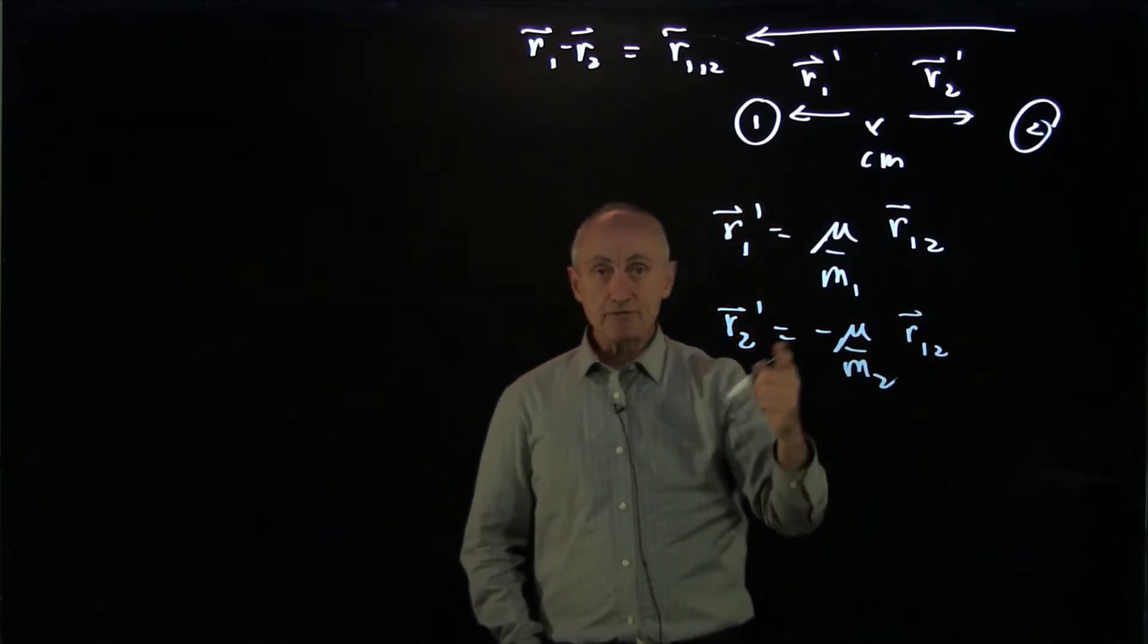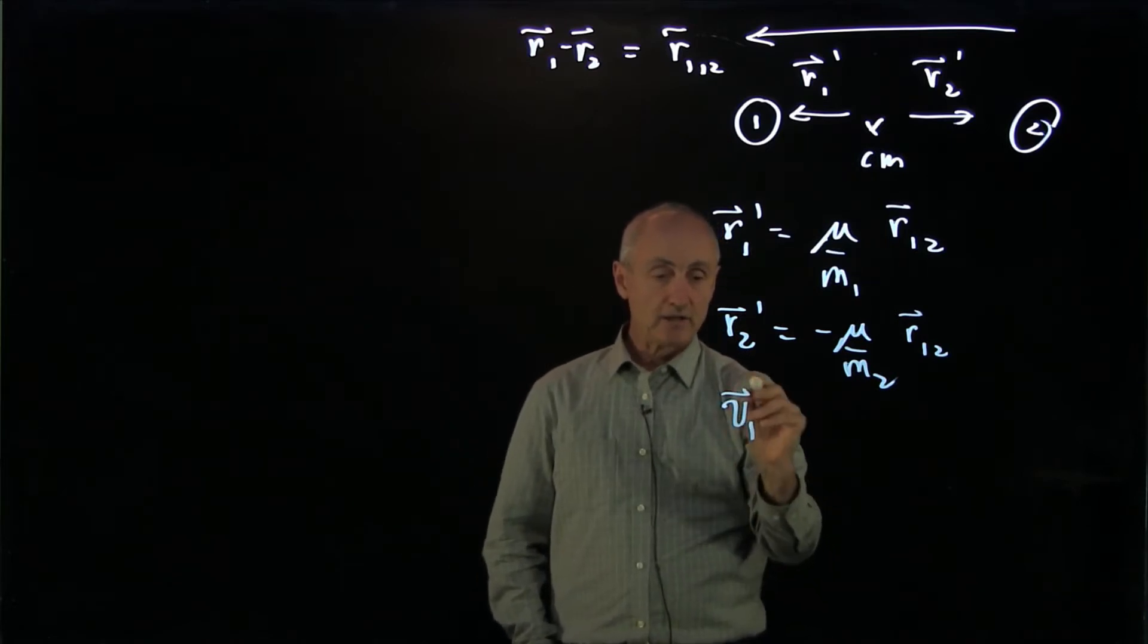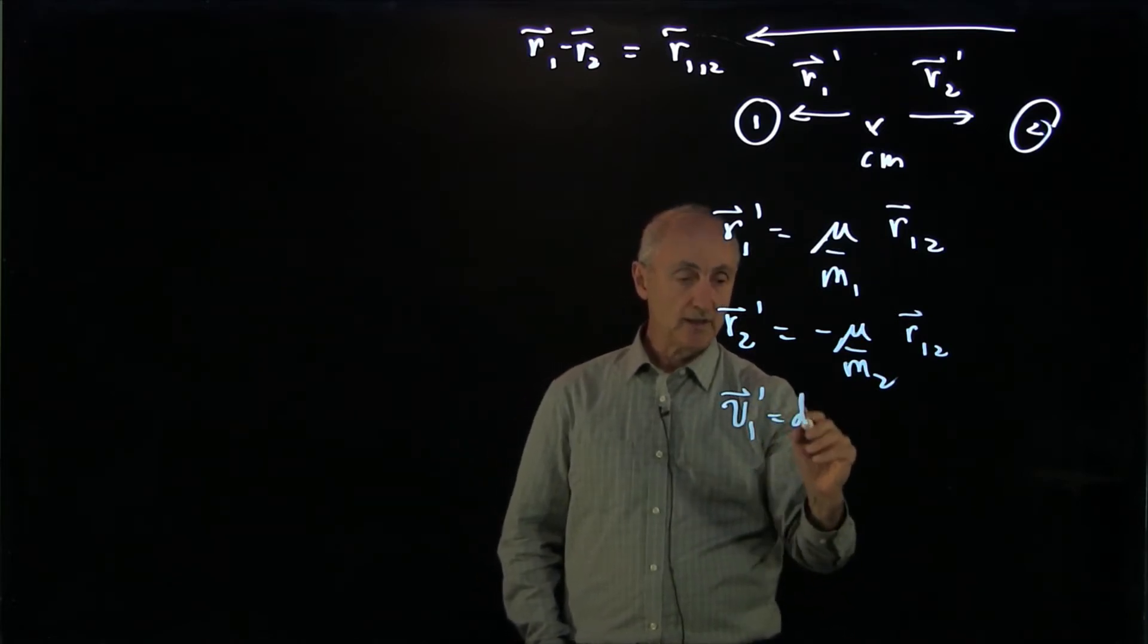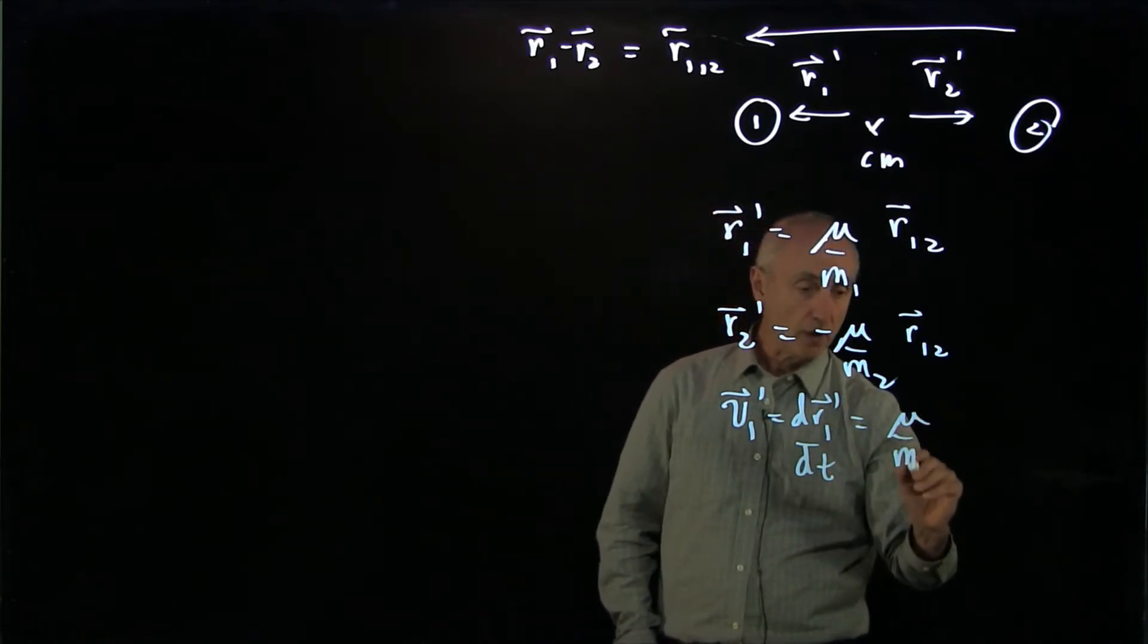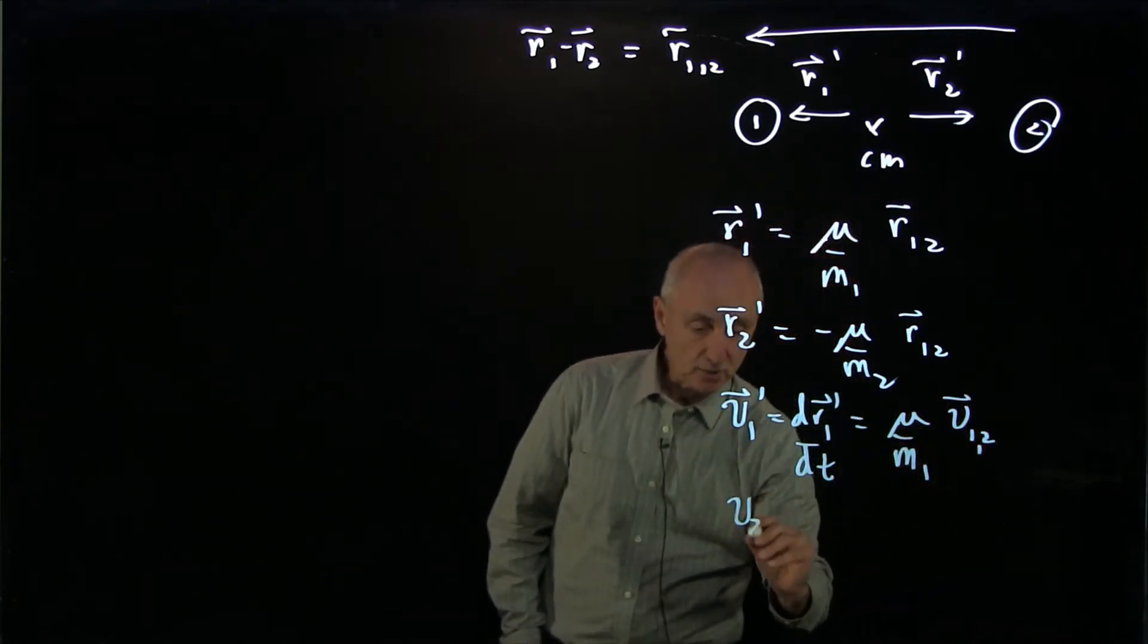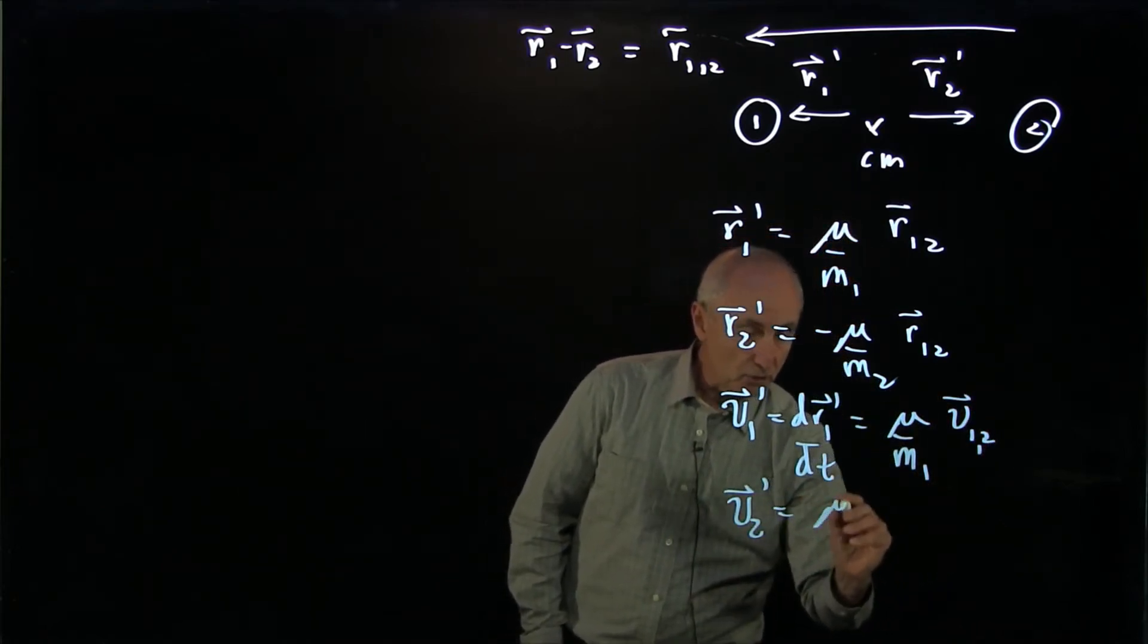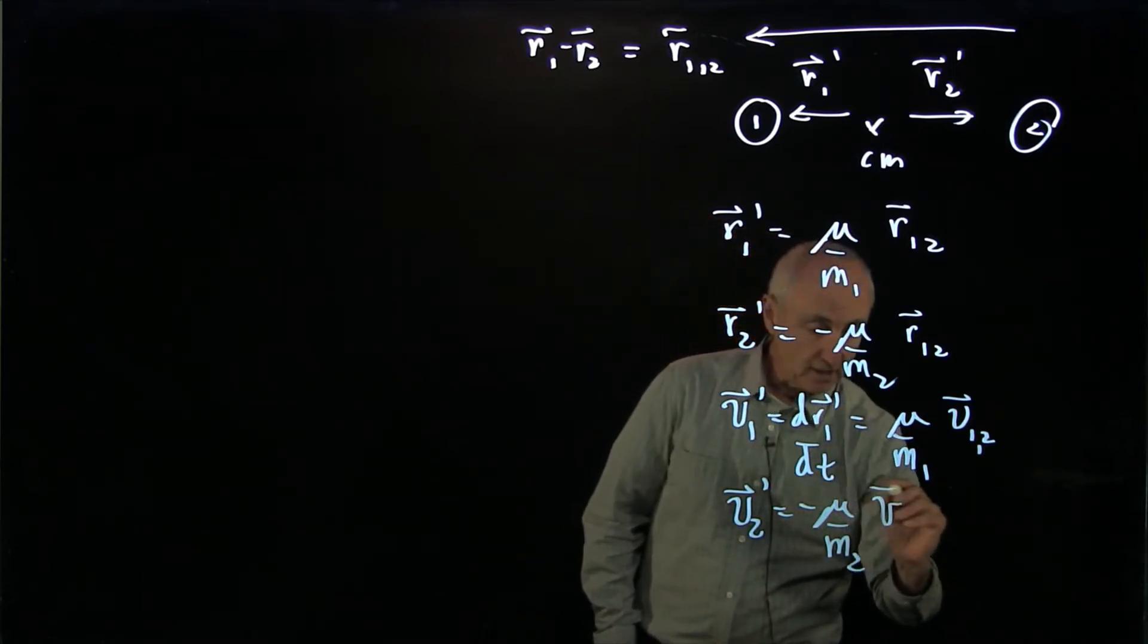Now we can differentiate the positions in the center of mass frame, and we find that v1 prime, which is of course the derivative of the position, is just mu over m1 times v12. And v2 prime is equal to mu over m2 with a minus sign times v12.